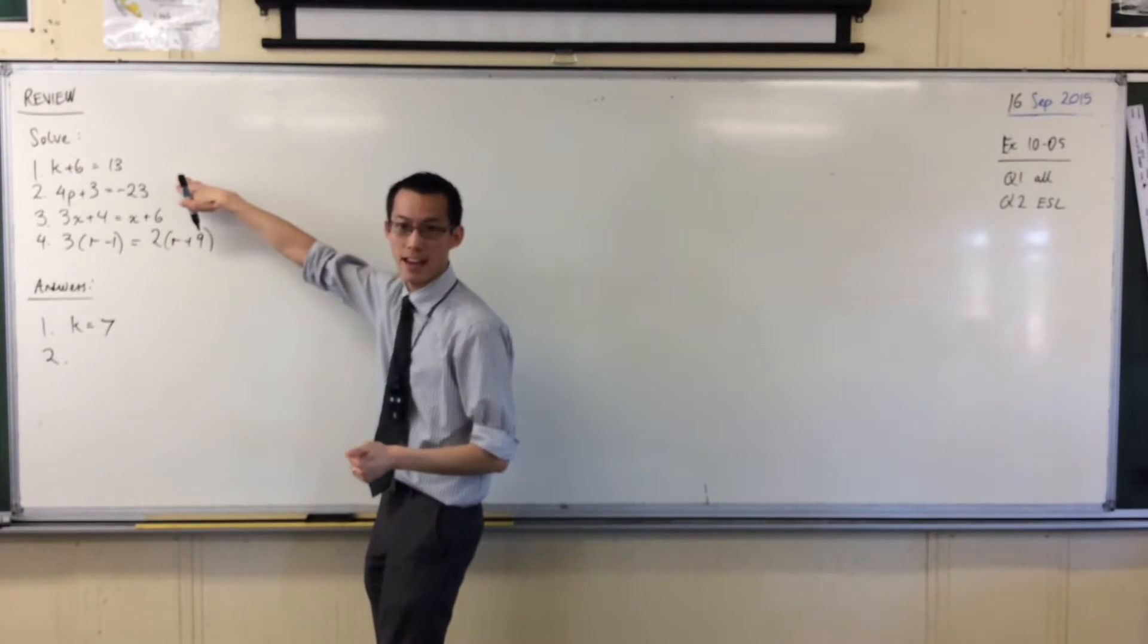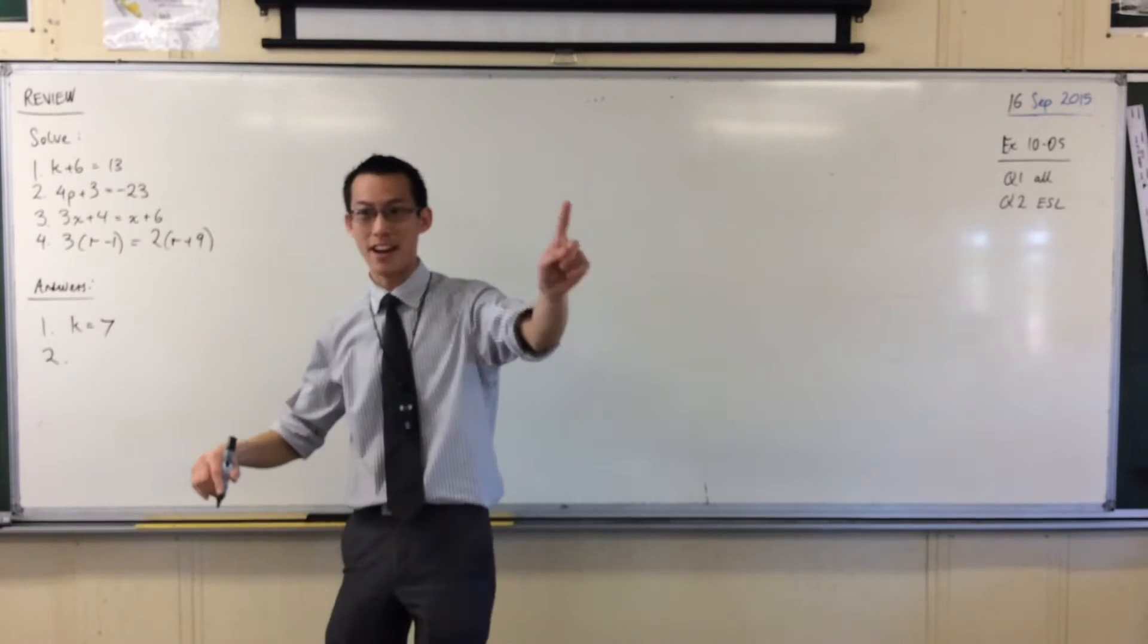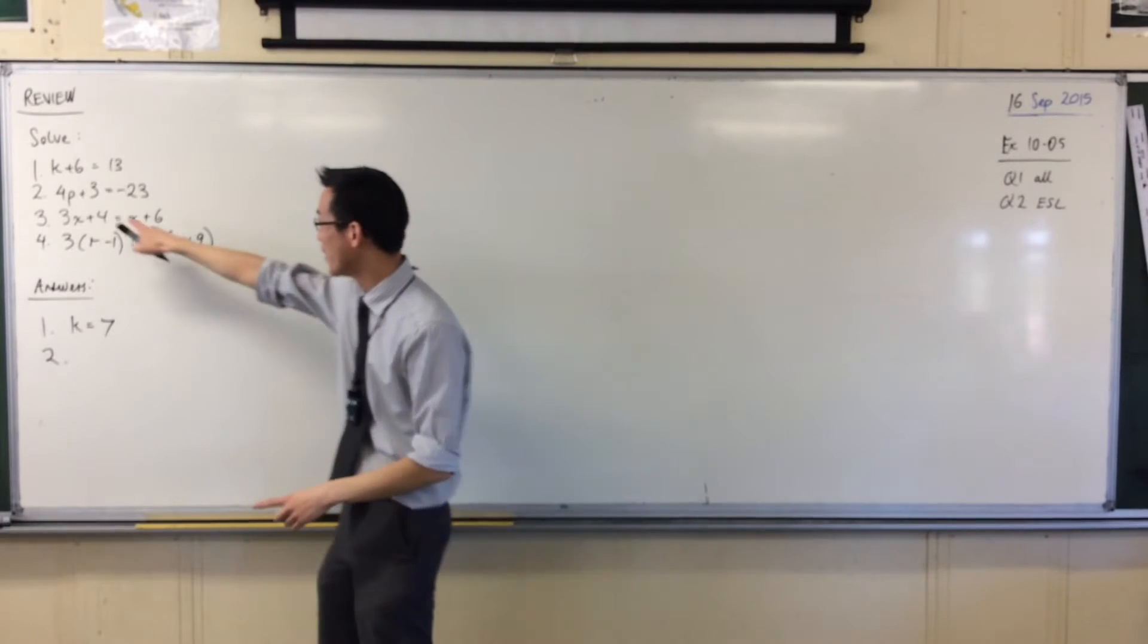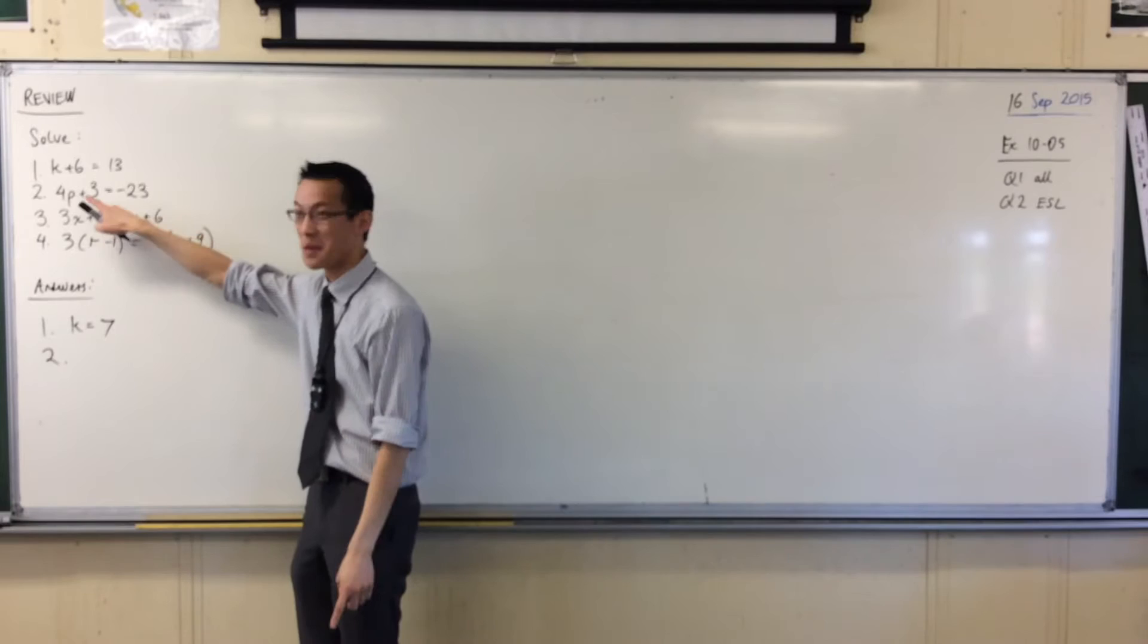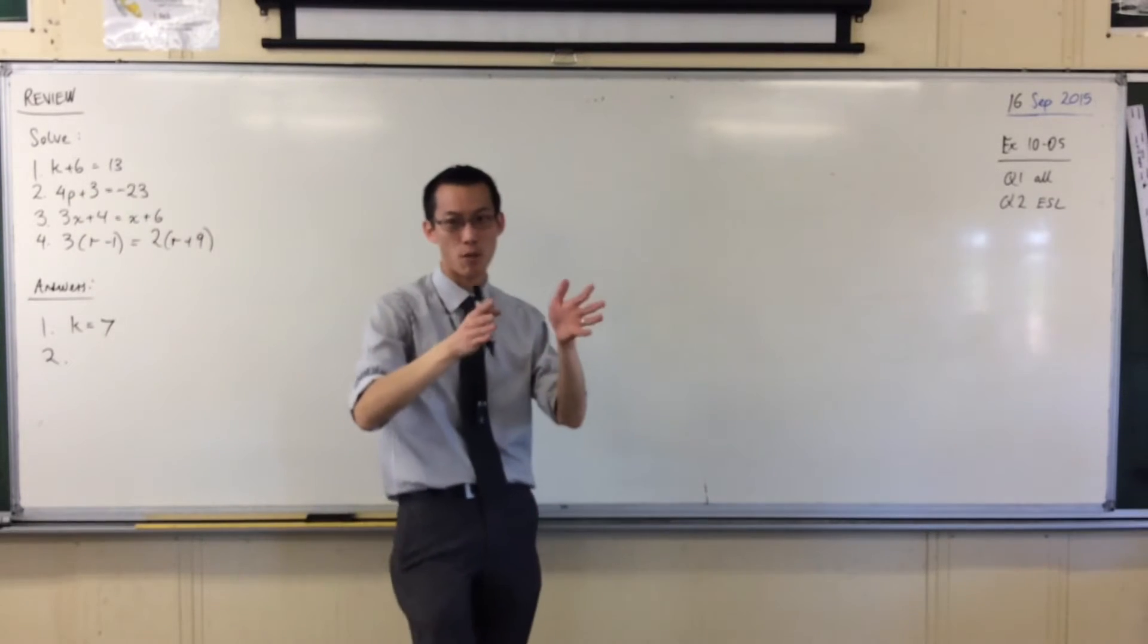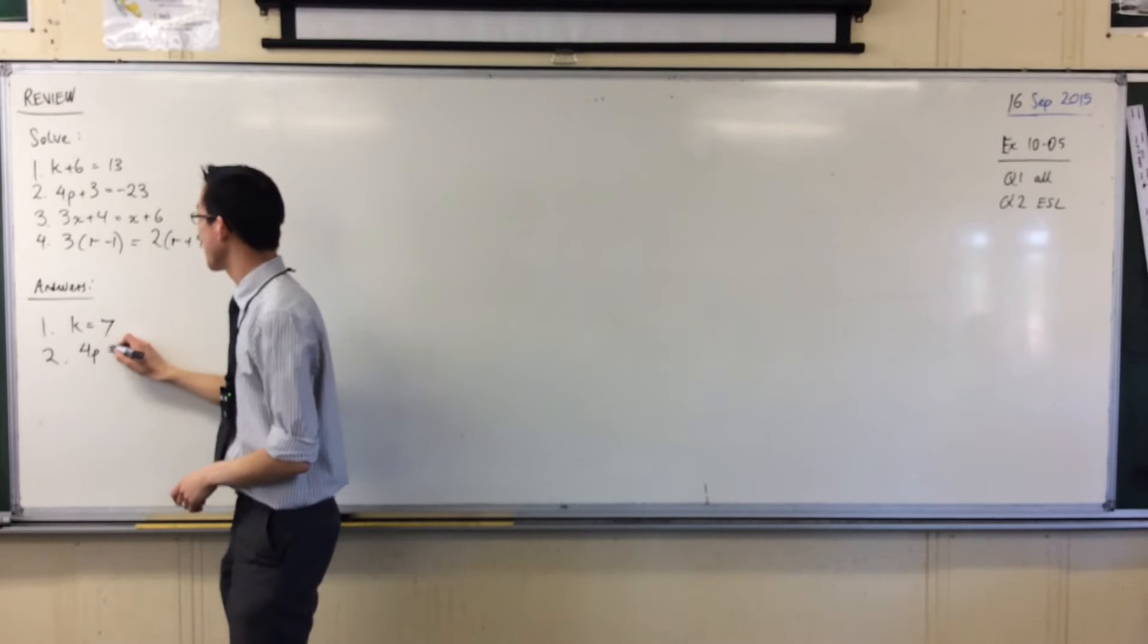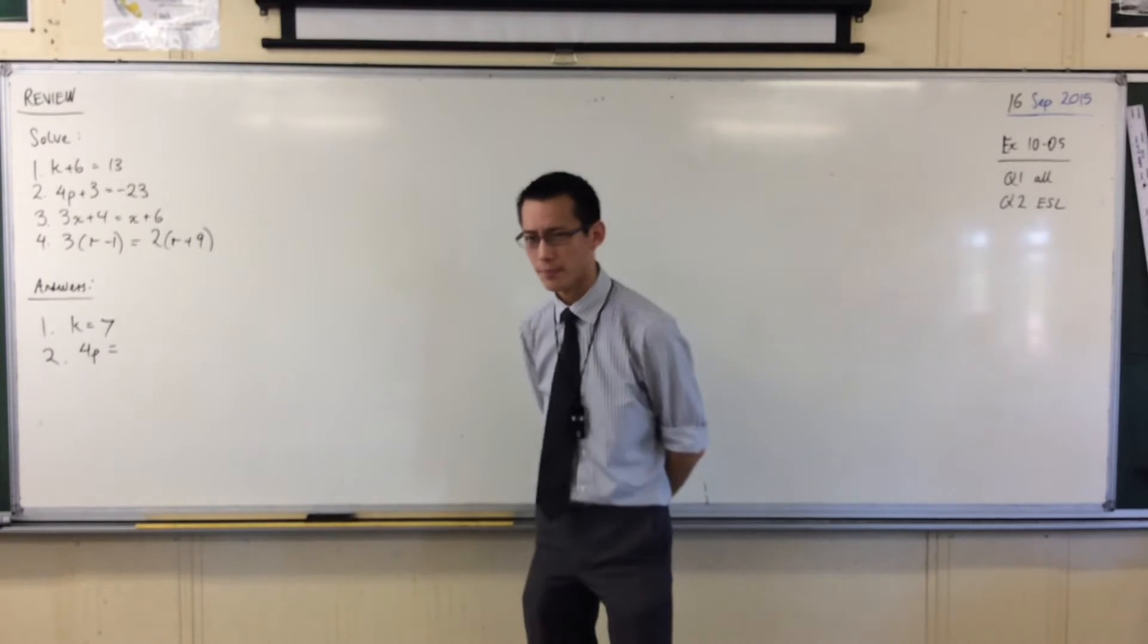Someone else give me a hand out for number two. First step, Will. I am going to take away a number. Five is probably not the greatest choice on question two. I'm going to take away three. I think that would be a better choice because it will get the pronoun rule by itself on that side. So I'm going to write 4P equals, so I took away three. What does that leave me with on the right-hand side? Yeah, Rachel.